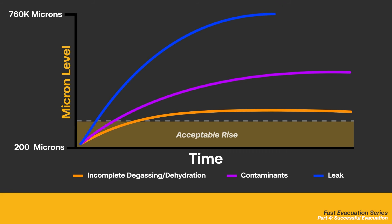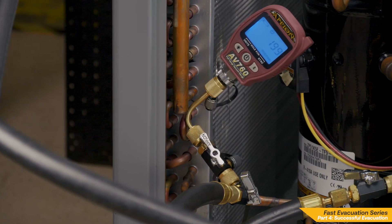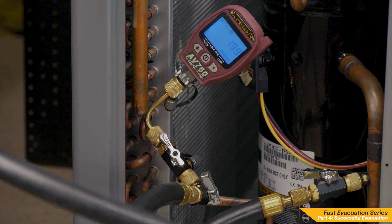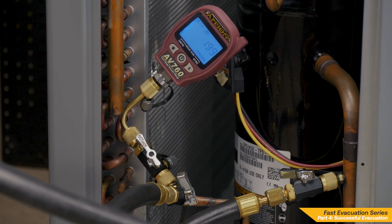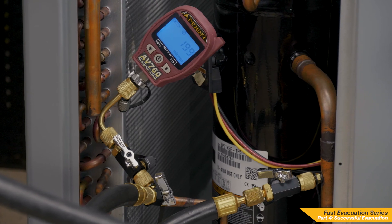Again, it's normal to see a rise during a decay test. Using a full range vacuum gauge will help you diagnose the vacuum and better understand what is happening inside the system. Once the issues have been addressed, another decay test must be performed. If the system successfully passes the decay test, the evacuation is deemed successful.